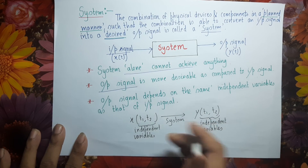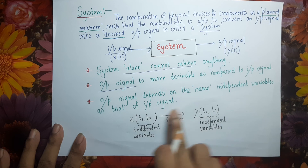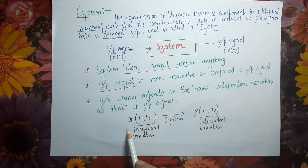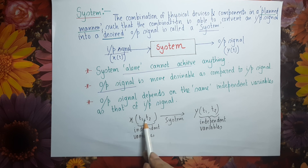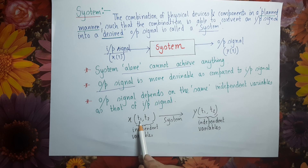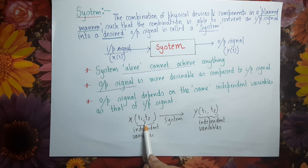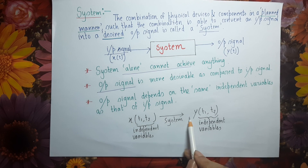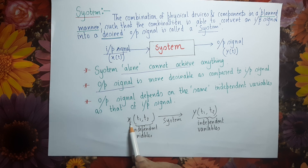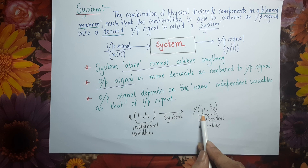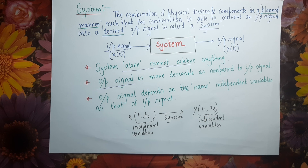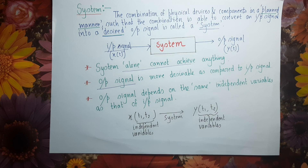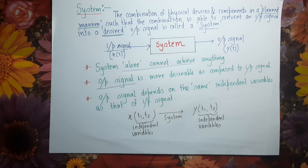The output signal depends on the same independent variables as the input signal. For example, if the input signal X varies with respect to two independent variables T1 and T2, then the output signal Y will also depend on the same independent variables T1 and T2. I will finish this lecture here — if you have any doubts, ask in the comment section. In the next lecture, I will start exactly from where I finished.